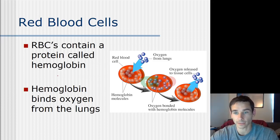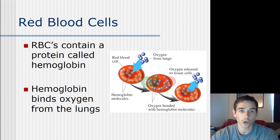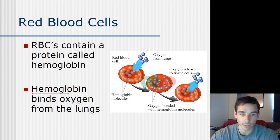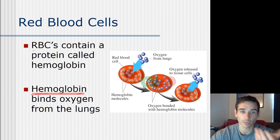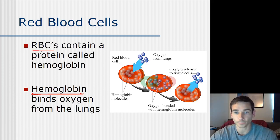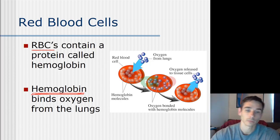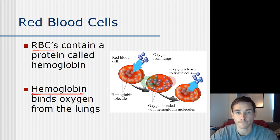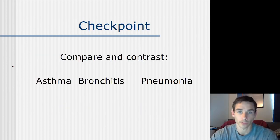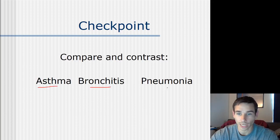Without going too deep into the blood system yet - oxygen diffuses from the lungs into the blood and is grabbed by hemoglobin, a protein inside red blood cells (RBCs). Hemoglobin transports the oxygen away from the lungs to wherever it's needed in the body - it's kind of like the Uber driver of your body, transporting oxygen to its destination.